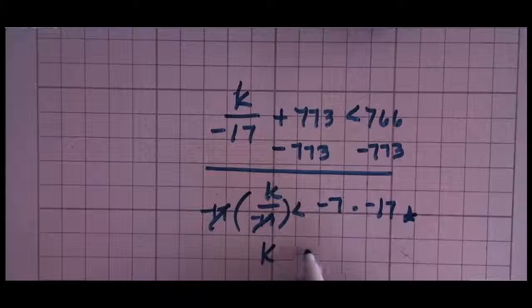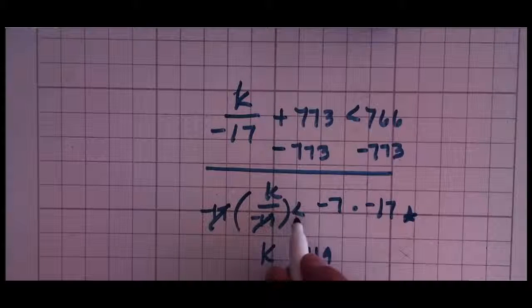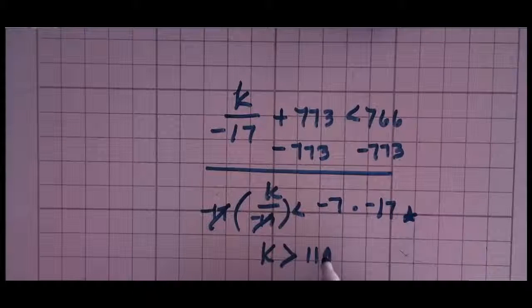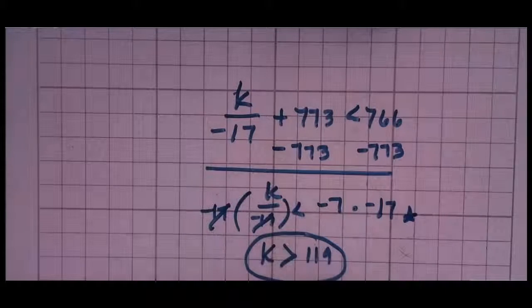k 119. But because I multiplied by a negative number, instead of the less than sign going to the left, the less than sign goes to the right. And the answer is k is greater than 119.